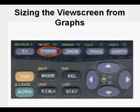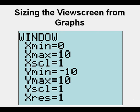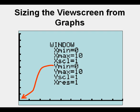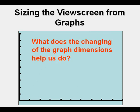Now we're going to go to our window again and change our y-min value from negative 10 to 0. When we press graph, we see further zooming in on the window. We now have y-min at 0, showing only quadrant 1 — nothing below the x-axis and nothing to the left of the y-axis. This allows us to focus in better on quadrant 1 when doing our graphing.